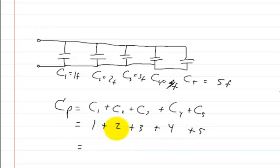Let's see, one plus two is three, plus three is six, plus four is ten, plus five is fifteen. So you would get fifteen farads. The capacitance in parallel for this entire circuit would just be 15 farads.